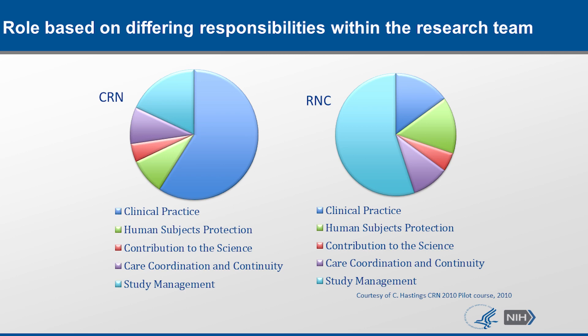Roles based on different responsibilities within the research team include the clinical research nurse coordinator and the research nurse coordinator. Both help with clinical practice, human subjects protection, contribution to the science, care coordination and continuity of care, and study management. Both roles do the same things, but they have different responsibilities, and the weight of each role may differ.